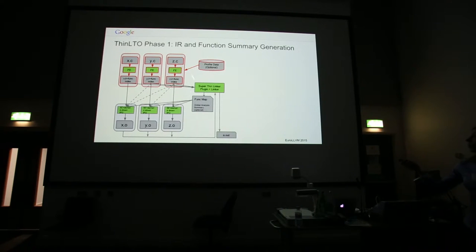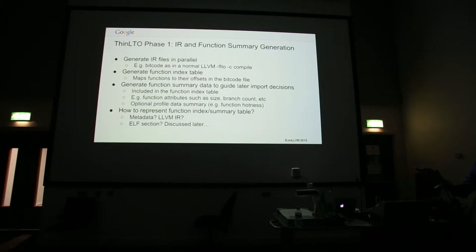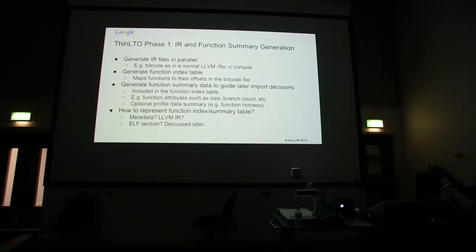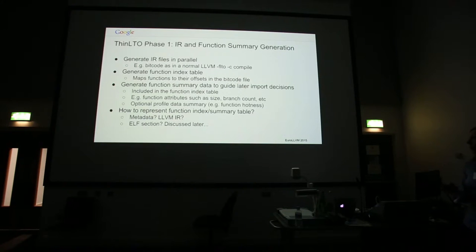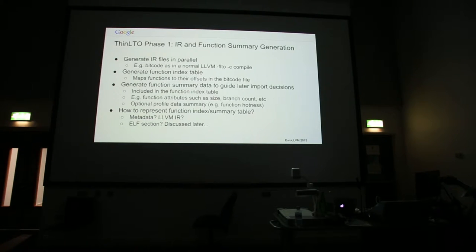Phase one is the generation of the IR function summary. The IR files can all be generated in parallel — just a normal dot-lto-c compile. But in addition, it generates a function index table, which is a map between the functions and their offsets in the bitcode. Also in this table, there's function summary data encoded that helps drive later importing decisions.